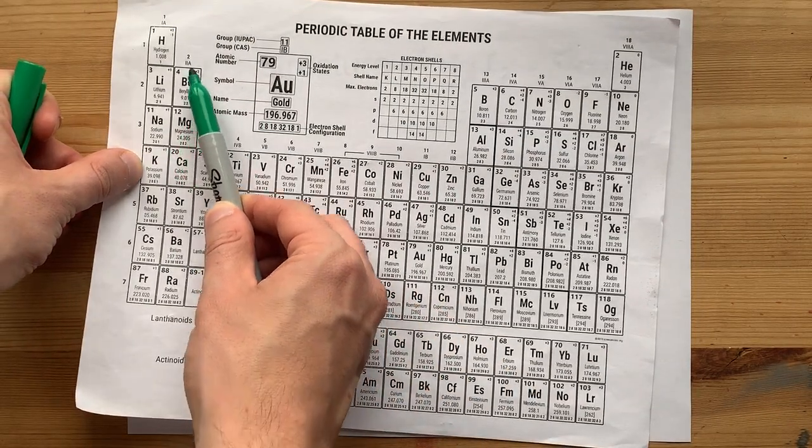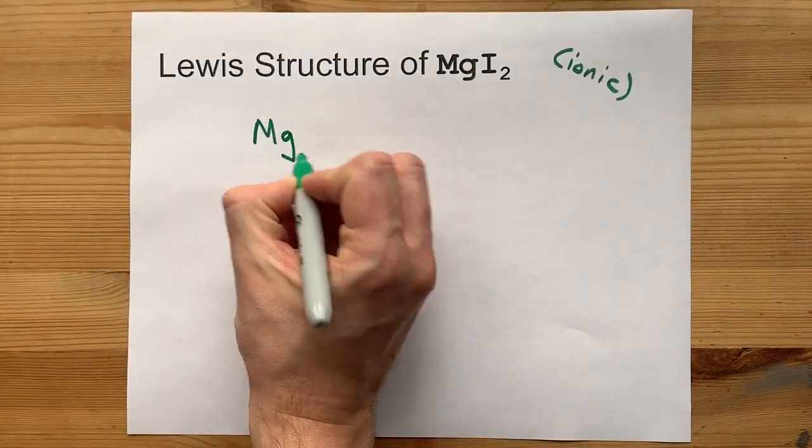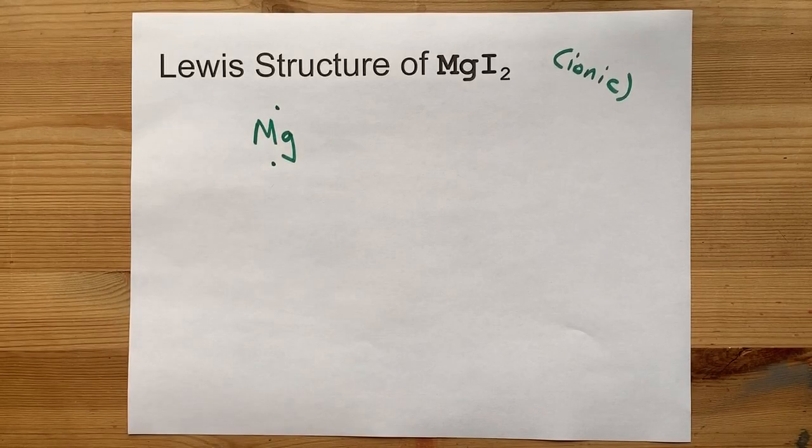Now, magnesium is in group two. That means it brings two valence electrons with it. Let's draw that Mg with its two dots.